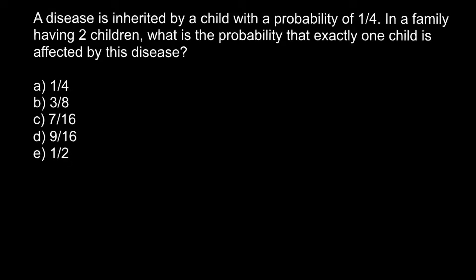Hello and welcome to Nikolai's genetics lessons. Today's problem is: a disease is inherited by a child with a probability of one quarter. In a family having two children, what is the probability that exactly one child is affected by this disease? I recommend you pause the video here and try to solve this problem on your own first.